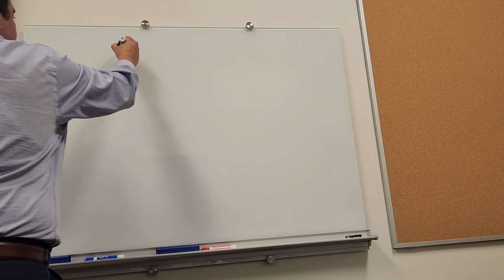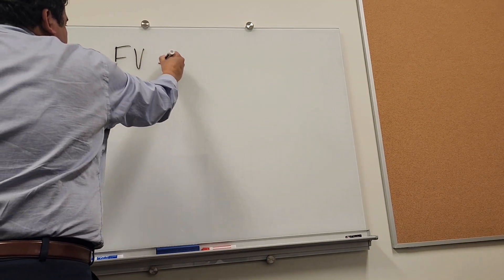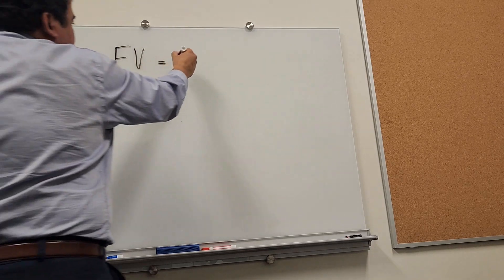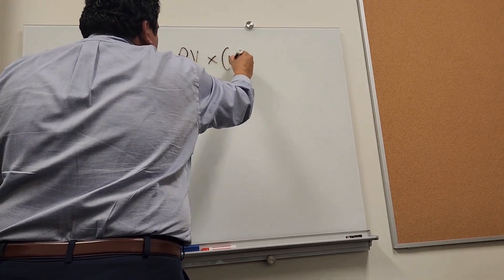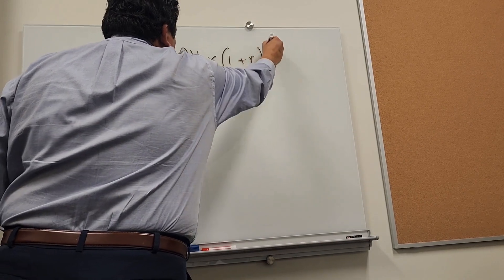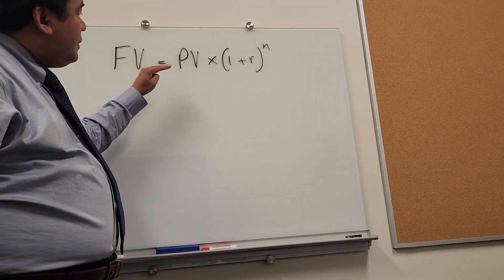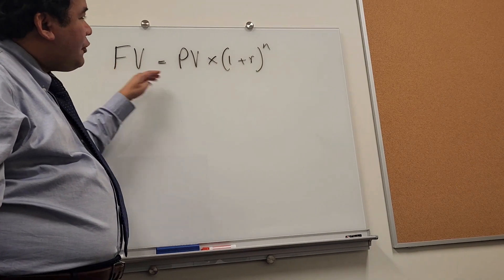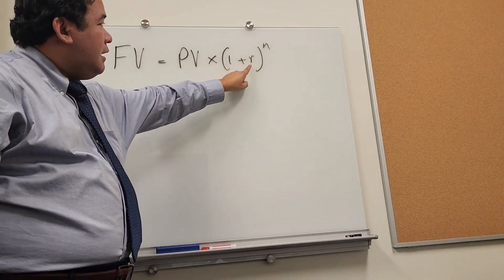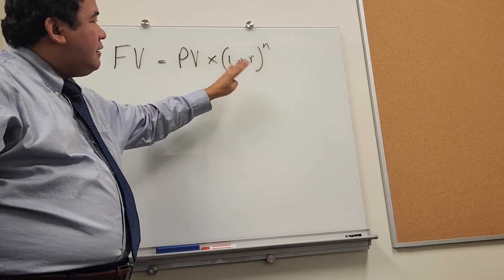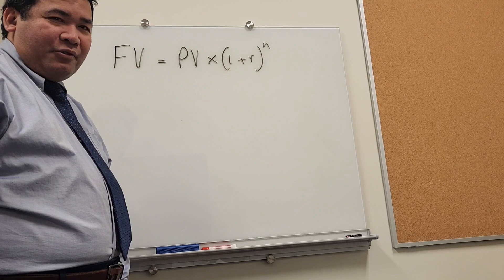To calculate future value: FV equals present value multiplied by 1 plus r raised to the n power. This equation is applicable for the calculation of future value given that r is constant. If r is not constant, then this is not a good method for calculating the future value.